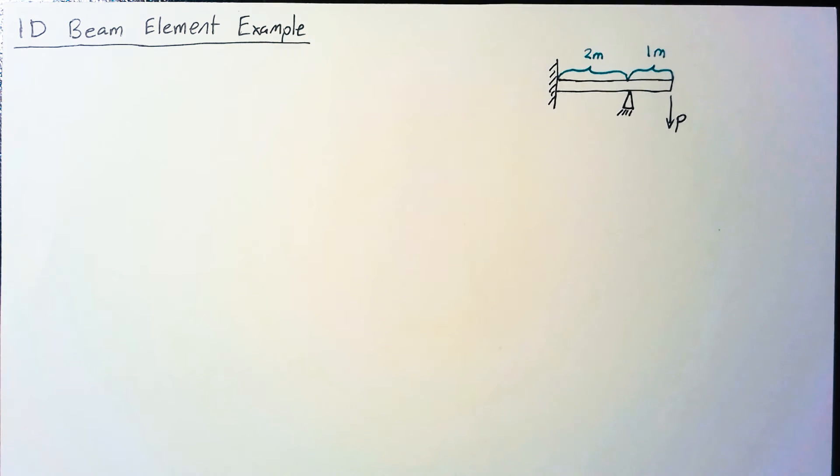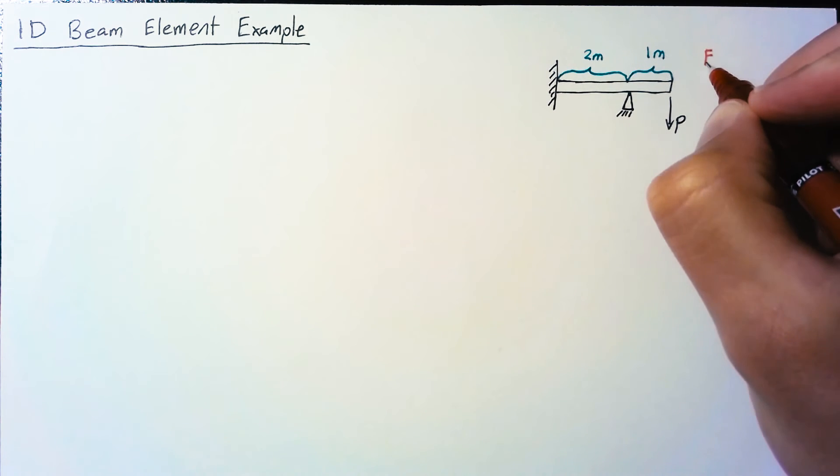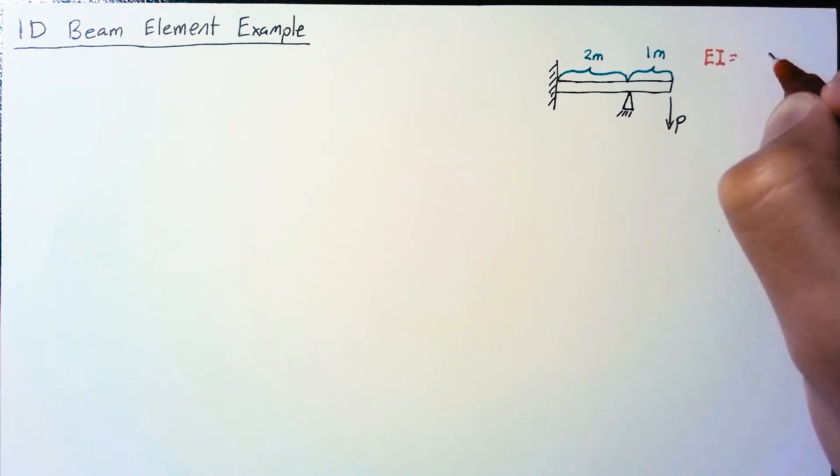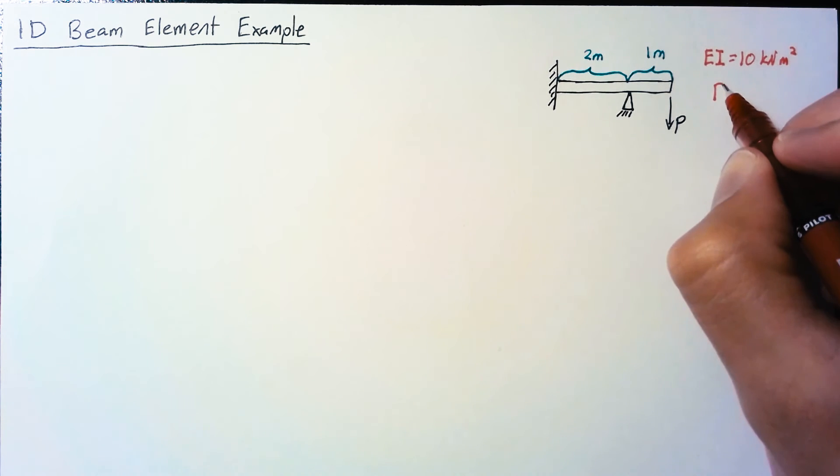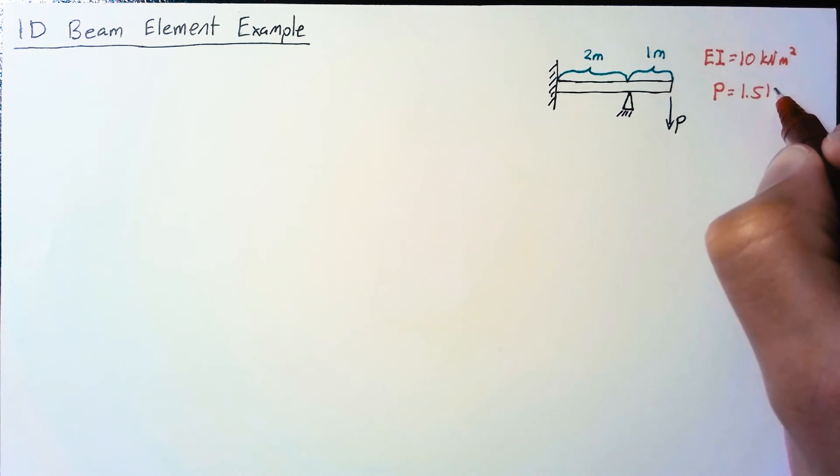The last few values we need are the product of E and I which is 10 kilonewton meters squared, and our force P which is 1.5 kilonewtons.